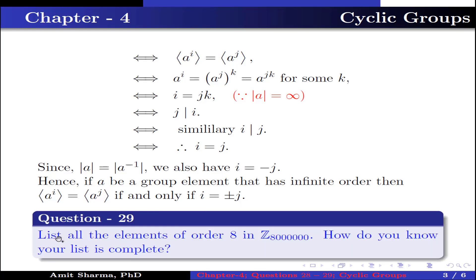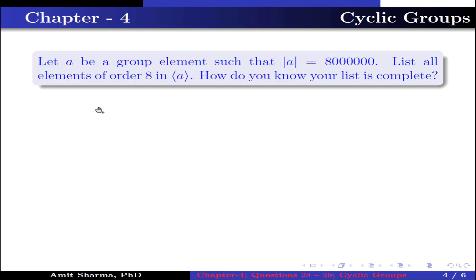Question number 29: list all the elements of order 8 in Z_800000. How do you know your list is complete? Also, let a be a group element such that the order of a is 800000. List all the elements of order 8 in the group generated by a. How do you know your list is complete?